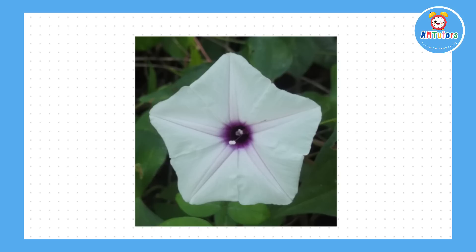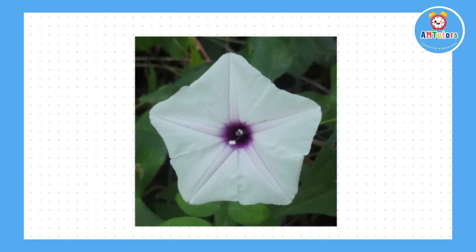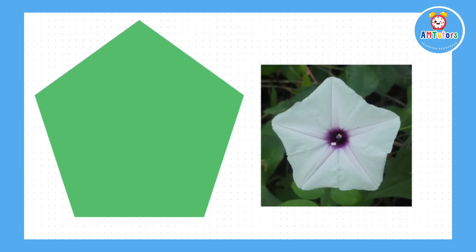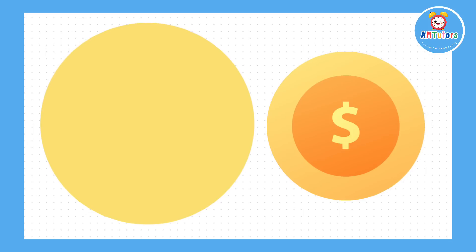Here we have a picture of a flower. What shape is this and how many edges does it have? The flower is a pentagon shape and it has five edges. Here is a picture of a coin. This coin looks like a circle and we know that circles have no edges.